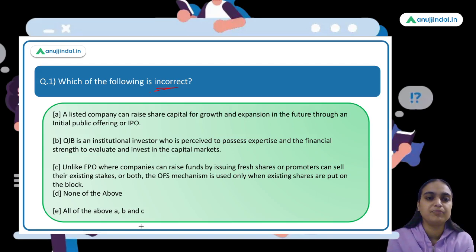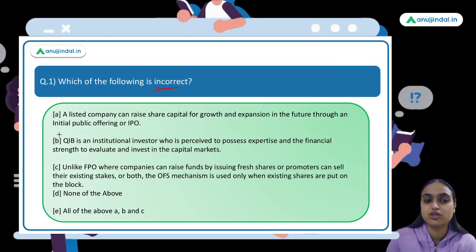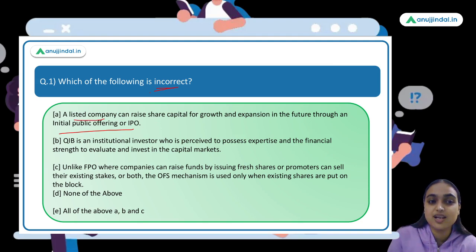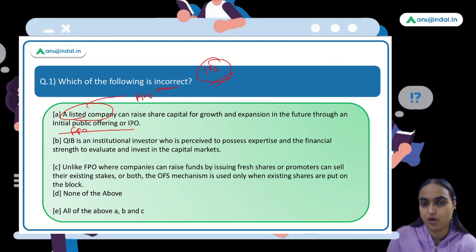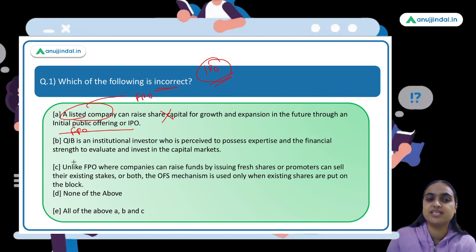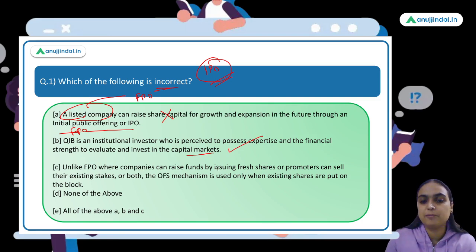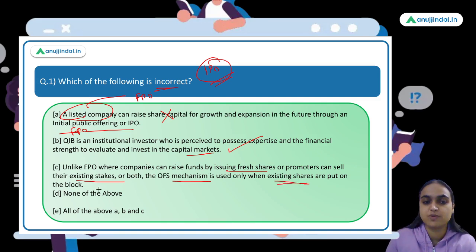Coming back to the question and identifying the incorrect statement. Statement A: 'A listed company can raise share capital for growth and expansion in future through IPO' — this is incorrect. A listed company would do an FPO, not an IPO. The IPO is for when a company is getting listed for the first time. Statement B about QIBs is correct. Statement C about OFS involving only existing shares is correct. So the answer is option A.